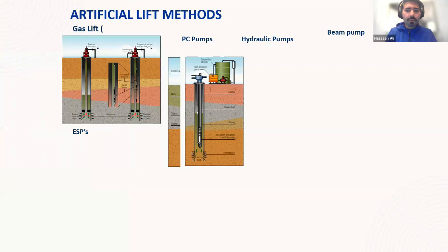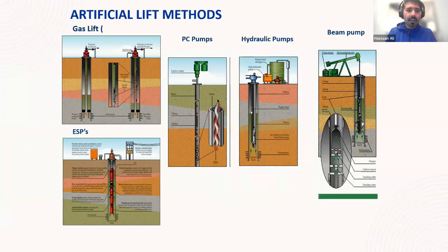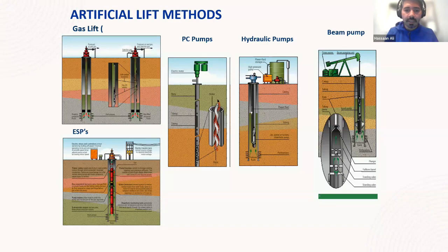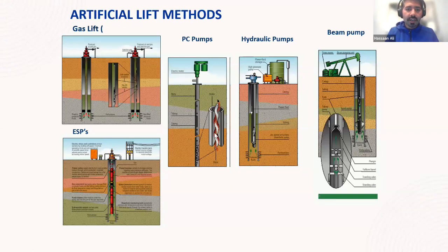Some of the methods of artificial lift more commonly used in the industry are gas lift, which is a very reliable system used for many decades. We have progressive cavity pumps, hydraulic pumps, and beam pumps — a universally recognized icon of the oil and gas industry, and one of the primary methods of artificial lift. We also have ESPs, which are a more premium or high-tier method of artificial lift.